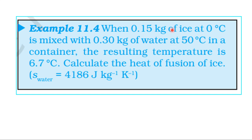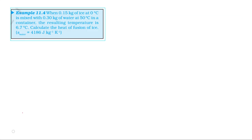Water transfers heat — water loses heat, ice gains heat. So the water is mixed with the ice, and the final temperature is 6.7 degree centigrade. Applying the principle of calorimetry: heat lost by hot body is equal to heat gained by cold body. That is, heat lost by water is equal to heat gained by ice.